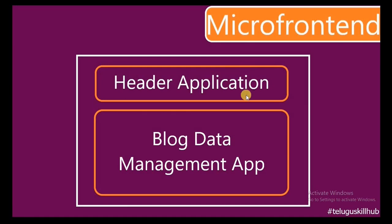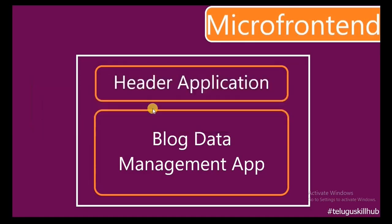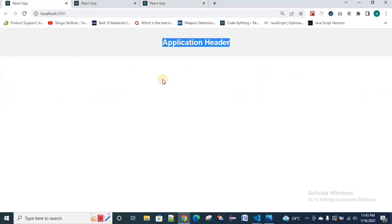We render the two applications on one server. The header application runs on one server and the blogging data runs on a different server. We integrate the two servers and run each individual server. This is a very simple application, and you can follow along with the code example.